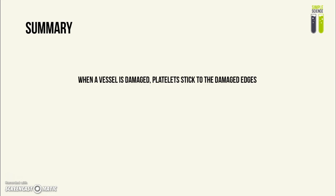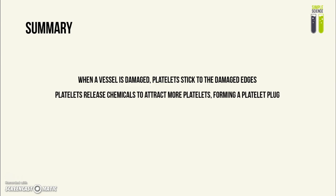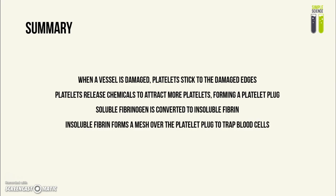For blood clotting: when a vessel is damaged, platelets stick to the cut edges and release chemicals to attract more platelets, forming a platelet plug. Soluble fibrinogen — a plasma protein — is then converted into insoluble fibrin, which forms a mesh or net over the platelet plug so that red blood cells are trapped inside the blood vessel.